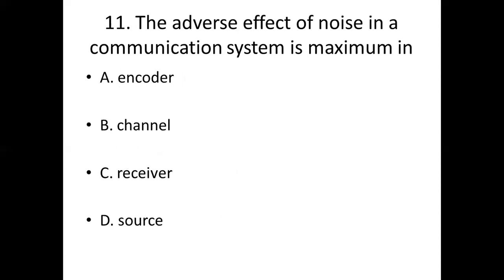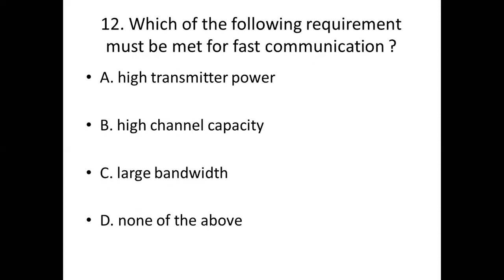12th bit. Which of the following requirements must be met for fast communication? Option A, higher transmitted power. Option B, higher channel capacity. Option C, large bandwidth. Option D, none of the above. Answer: Option C, large bandwidth.